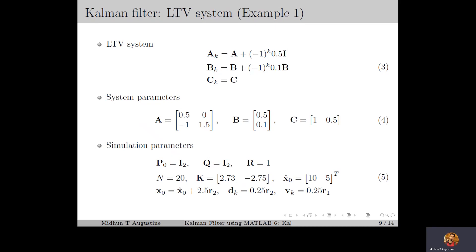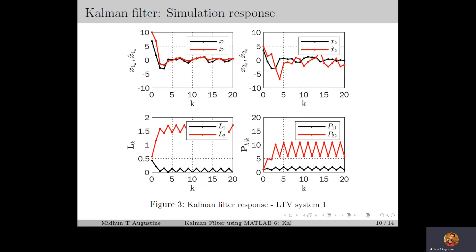Next we discuss the simulation of the linear time varying system example from lecture 4, in which the system matrix, input matrix, and output matrix are chosen as in equation 3, and the system parameters are chosen as in equation 4. The simulation parameters are chosen as in equation 5, which is the same as in the previous example. For the LTV system, Figure 3 shows the plots for the actual states X1K, X2K and estimated states X̂1K, X̂2K, the elements of the estimator gain matrix LK, and the diagonal elements of the Riccati matrix PK|K.